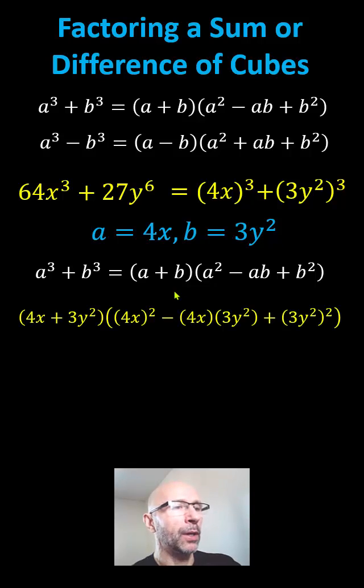The binomial factor of a plus b is 4x plus 3y squared. The trinomial factor of a squared minus ab plus b squared is the square of 4x minus 4x times 3y squared plus a square of 3y squared. And now we simplify.